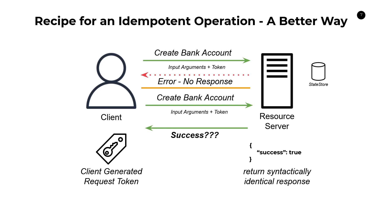That's the way to create solid idempotent APIs. There is a lot of overhead that goes into this — you need a state store, client-generated tokens passed in as part of input, and you probably want to bake that into your SDK or as part of your API contract. This isn't for the faint of heart, but this is the way to guarantee idempotency.